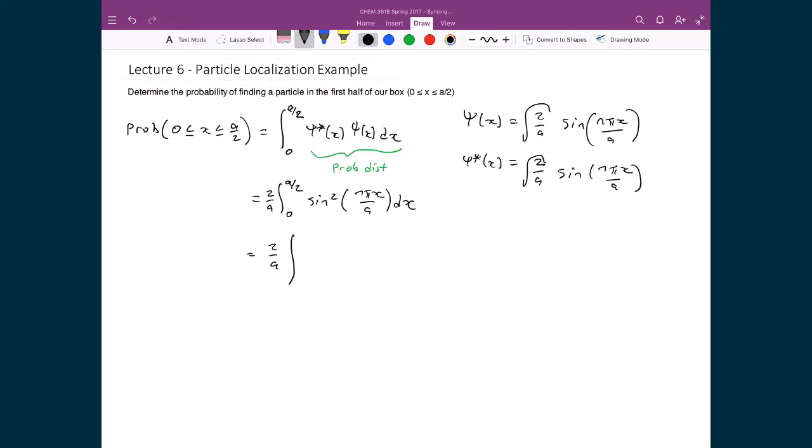u is equal to n pi x over a, which means du by dx is equal to n pi over a. This means that dx is equal to a du over n pi. If I write that directly into here, I have sine squared of u times a du over n pi.